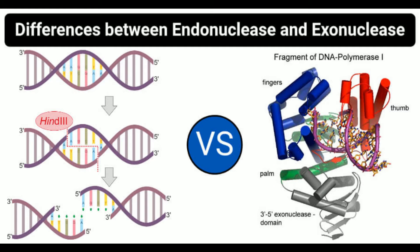The endonucleases that are specific to a particular sequence are termed restriction endonucleases. Restriction endonucleases are obtained from various bacteria and archaea, each of which is specific for different sites in the polynucleotide chain. The cleaved sequences form single-stranded ends, also called sticky ends, which are then hybridized by DNA ligase. The resulting DNA is called recombinant DNA, and the process is called recombination.